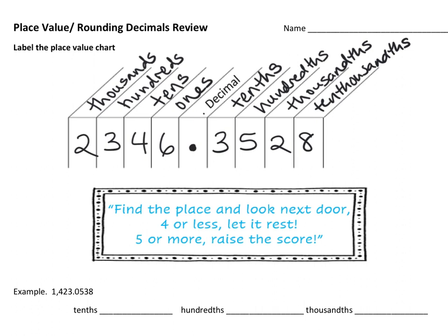Rounding itself is not hard — we just haven't done it in a minute, so it might be a little cobwebby. You've probably seen this phrase before: four or less, let it rest; five or more, raise the score. But what we forget is what we're looking at to say that rhyme. The rhyme should really be: find the place value that you want and look next door.